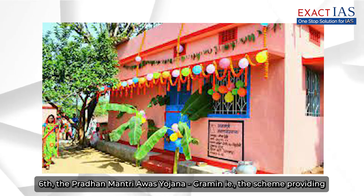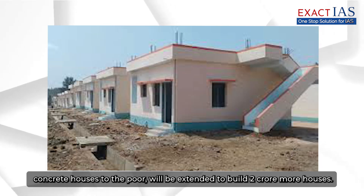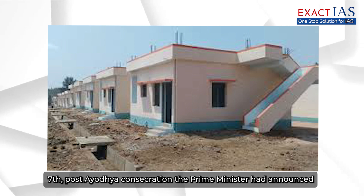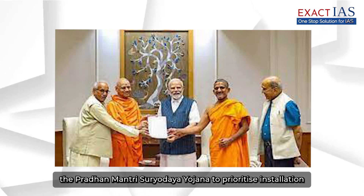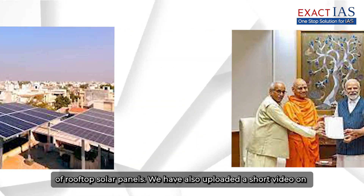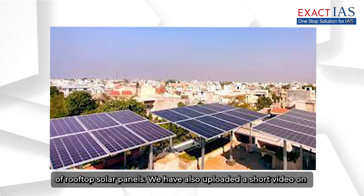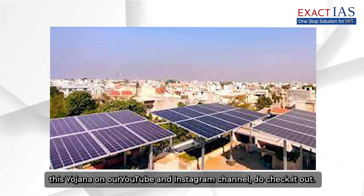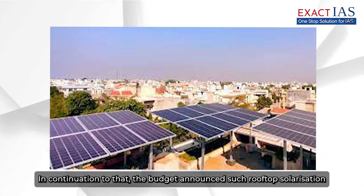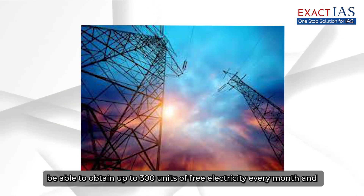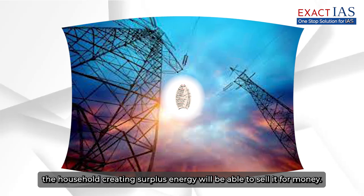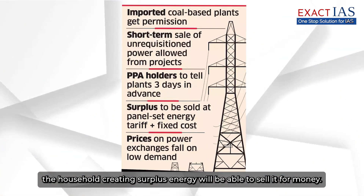Sixth, the Pradhan Mantri Awas Yojana Grameen — the scheme providing concrete houses to the poor — will be extended to build two crore more houses. Seventh, post-Ayodhya consecration, the Prime Minister had announced the Pradhan Mantri Suryodaya Yojana to prioritise installation of rooftop solar panels. The budget announced expansion of rooftop solarisation through which one crore households will be able to obtain up to 300 units of free electricity every month, and households creating surplus energy will be able to sell it for money.